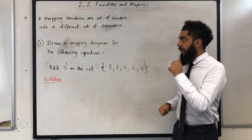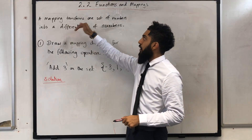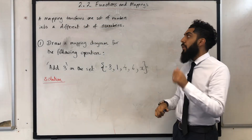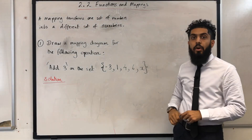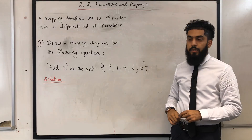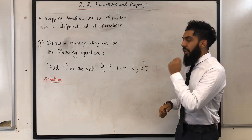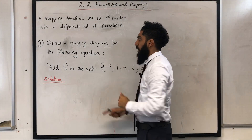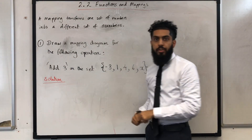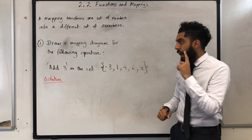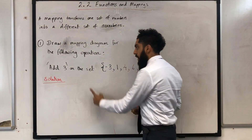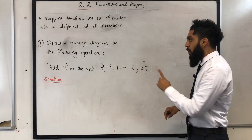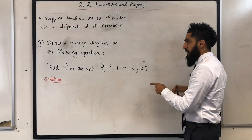First of all, a mapping transforms one set of numbers into a different set of numbers. Draw a mapping diagram for the following operation: Add 3 on the set {-3, 1, 4, 6, x}.